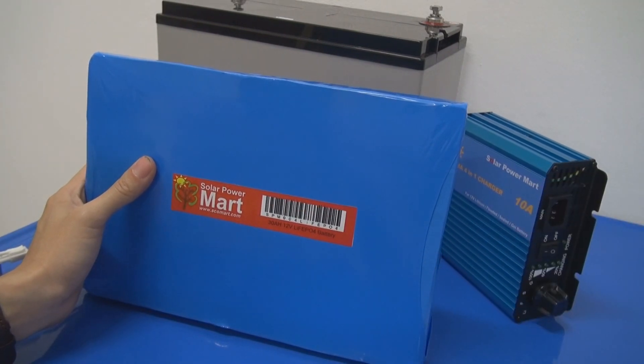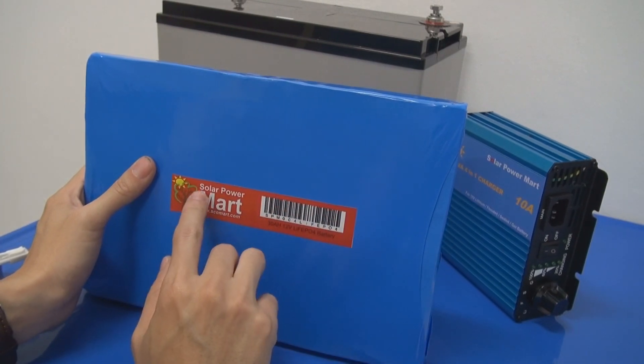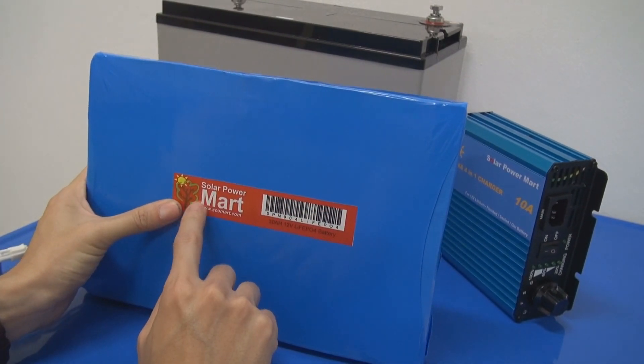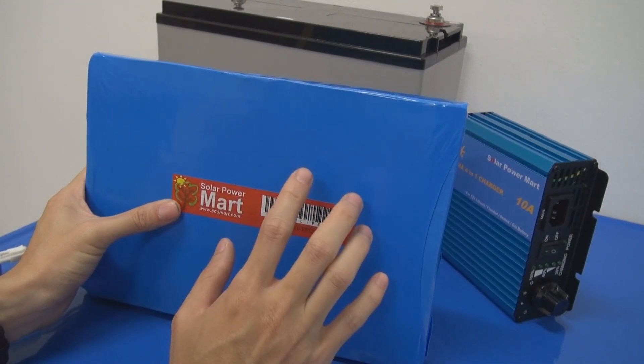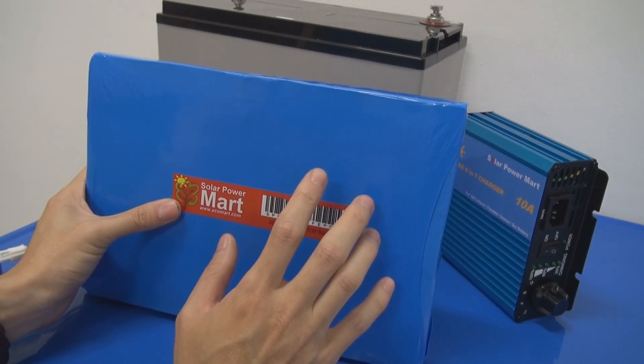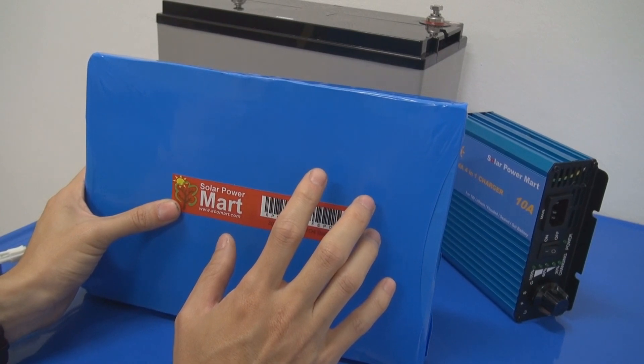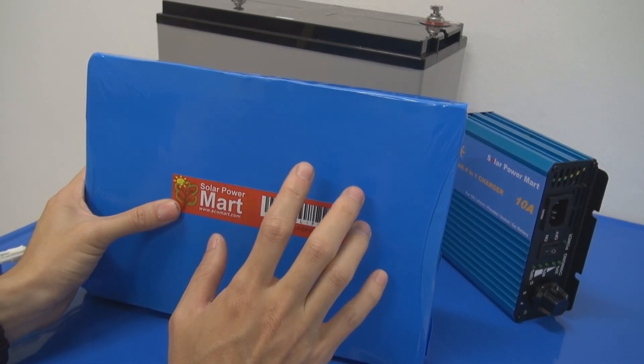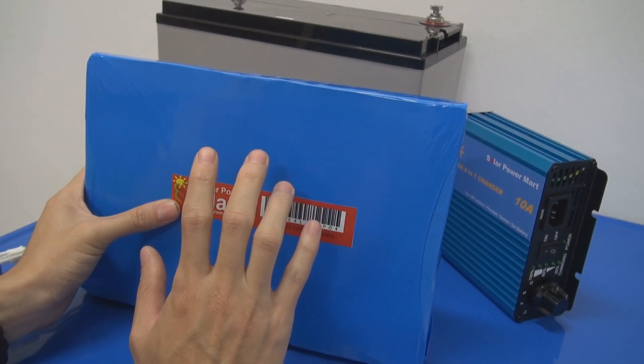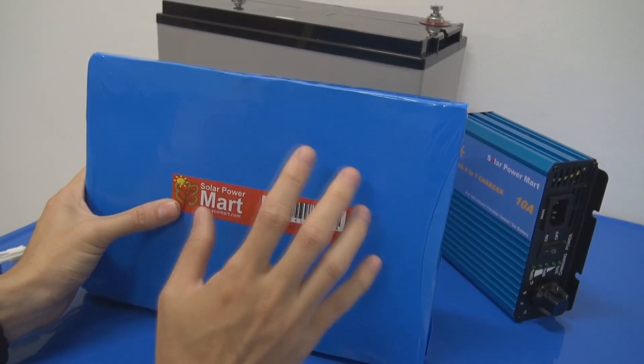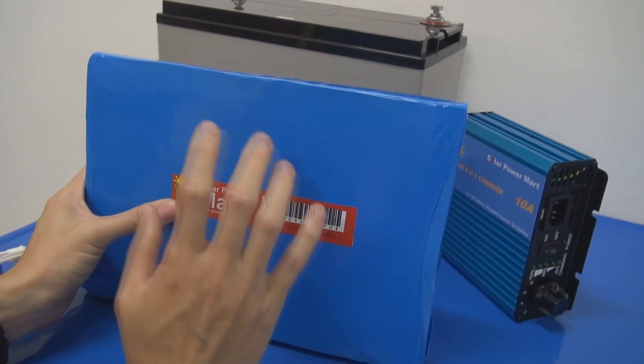These kinds of batteries are purposely designed for solar power applications. Especially the ones that we manufacture ourselves are designed for solar power application. Because of solar power application, we know that most of the time, this is going to be a very hot ambient temperature. So the battery itself is designed to withstand working conditions of roughly about 50C.